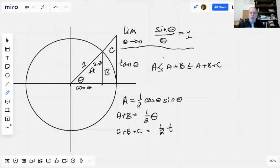Each of these is a triangle, so we've got one half of the base times the height. a plus b is the sector of the circle, so that's one half of theta,